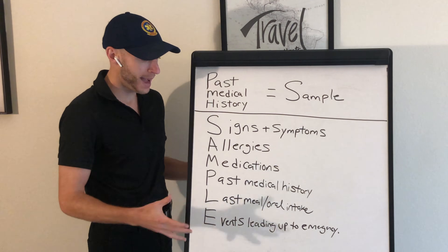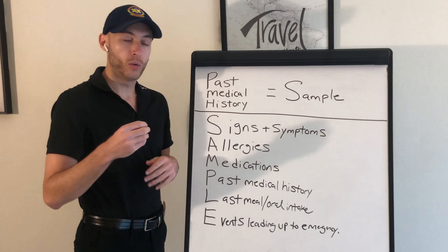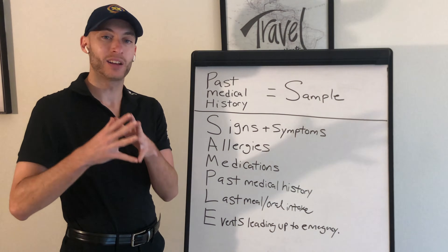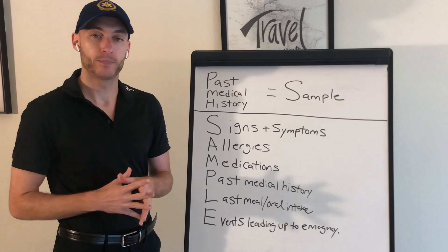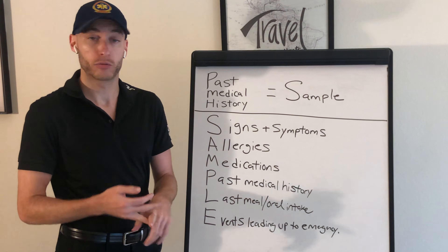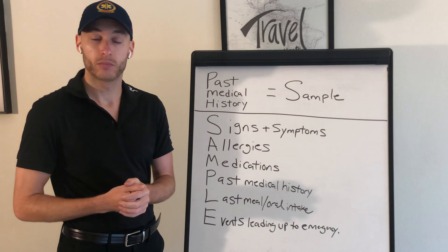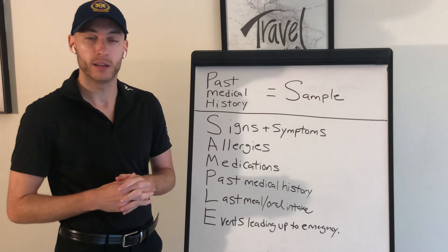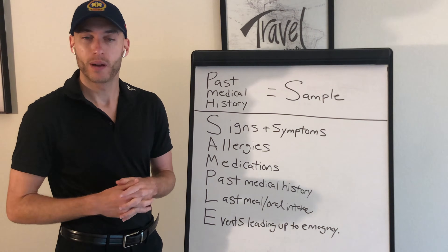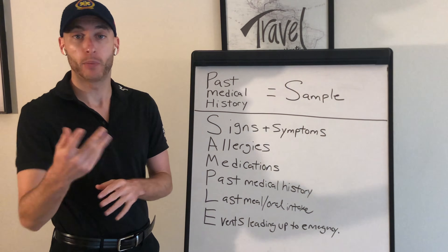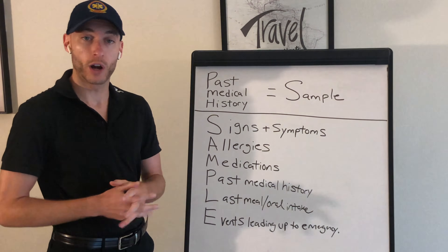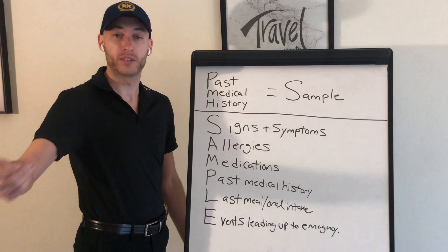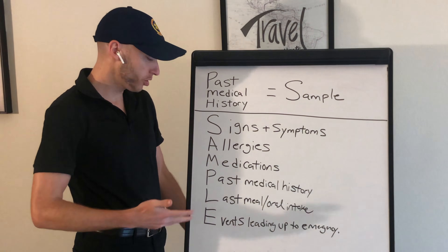P is past medical history — what are they diagnosed with by a doctor? That includes conditions like asthma, heart disease, GERD, bipolar disorder, COPD, congestive heart failure, diabetes type one or type two, thyroid disease, adrenal disease, sickle cell — so many different things.